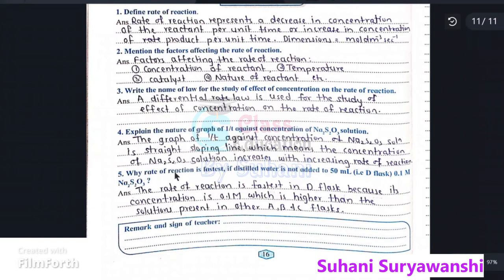Why is the rate of reaction fastest if distilled water is not added to 50 ml D flask of 0.1 mol Na2S2O3? The rate of reaction is fastest in D flask because its concentration is 0.1 mol, which is higher than the solutions prepared in other A, B and C flasks. So I hope this video is helpful for you. Thank you so much for watching this video.